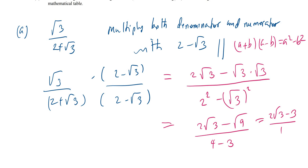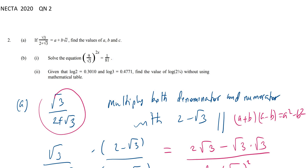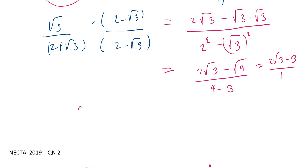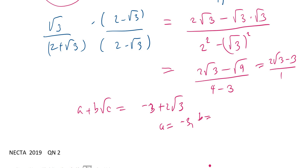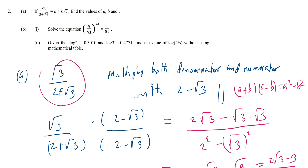We're told this expression equals a + b√c. So comparing: a + b√c = −3 + 2√3. From here, a = −3, b = 2, and c = 3. That completes part 2a.